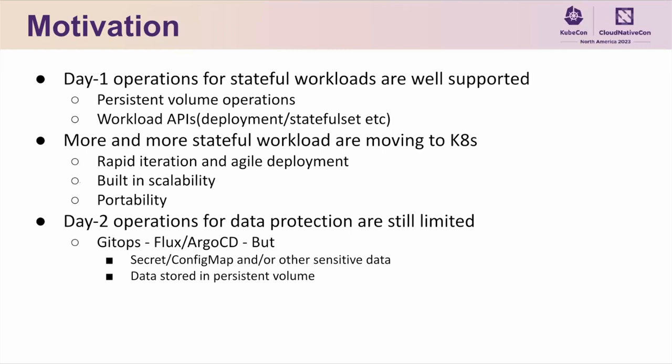Data protection in Kubernetes refers to the process of protecting valuable data and configs of applications running in a Kubernetes cluster. The result of the data protection process is typically called a backup. When an unexpected scenario happens — for example, data corruption by malfunctioning software or data loss due to a disaster — such a backup can be used to restore the protected workload to the states preserved in the backup.